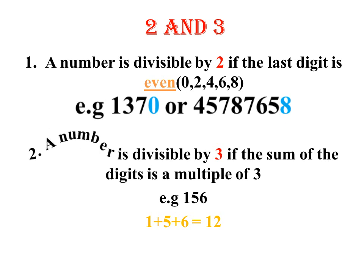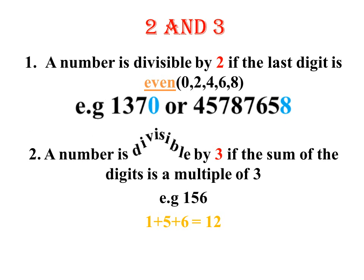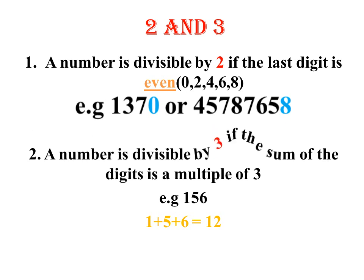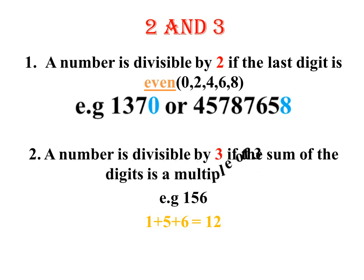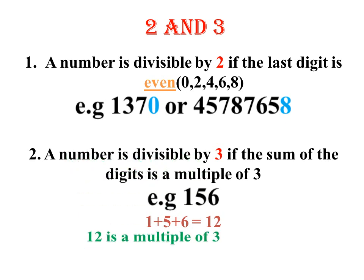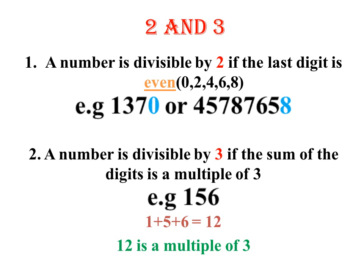For 3, we shall know a number is divisible by 3 if the sum of the digits is a multiple of 3. Like in our example, that is 156 — when you add 1 plus 5 plus 6, we get 12. And we know that 12 is a multiple of 3.